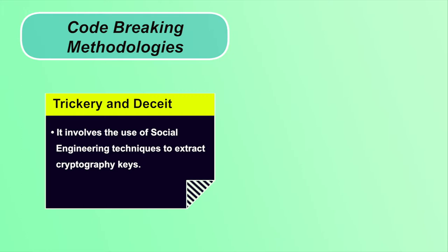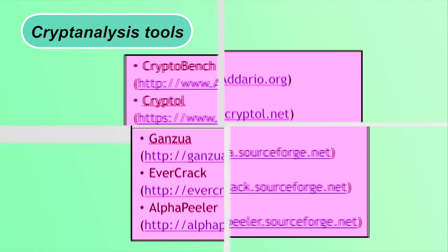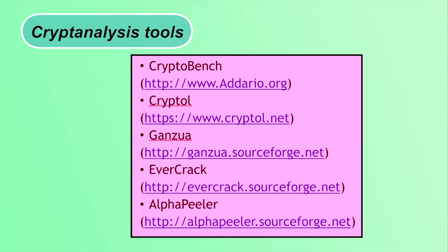In trickery and deceit, the attacker uses social engineering techniques — psychological manipulation of people — to get cryptographic keys. For example, if you use your pet's name as a password, the attacker asks questions to learn your pet name. In the one-time pad methodology, the attacker randomly chooses non-repeating groups of letters or numbers to get the original message. Cryptanalysis tools include CryptoBench, Cryptol, Gansua, Evercrack, and Alpha Peeler.